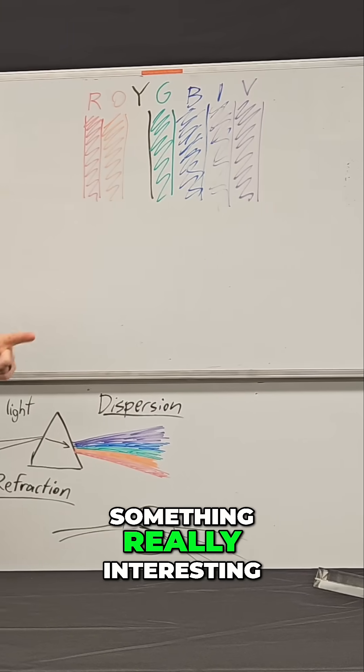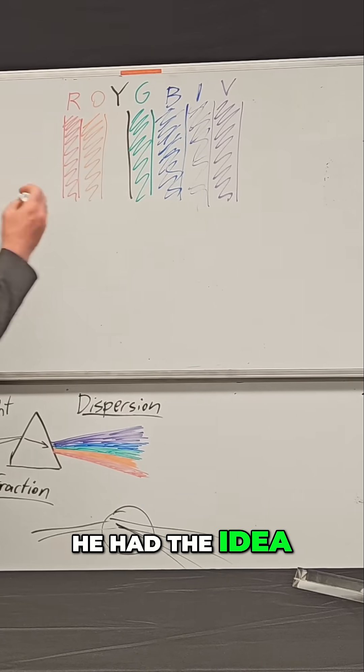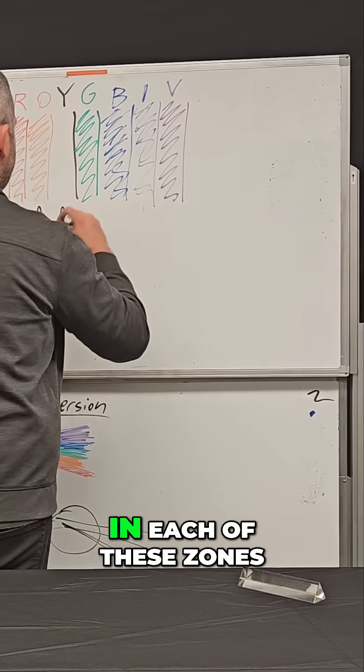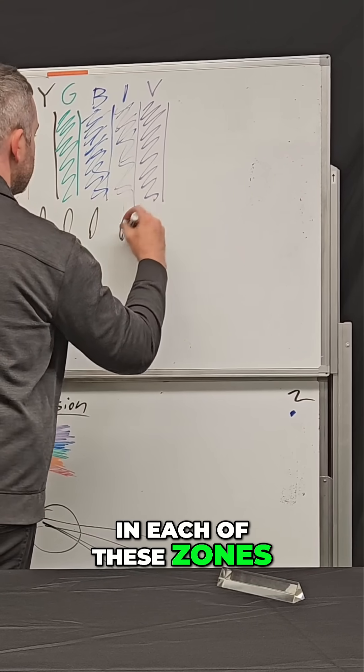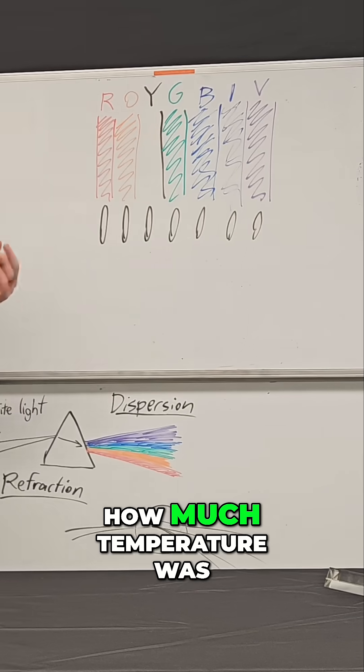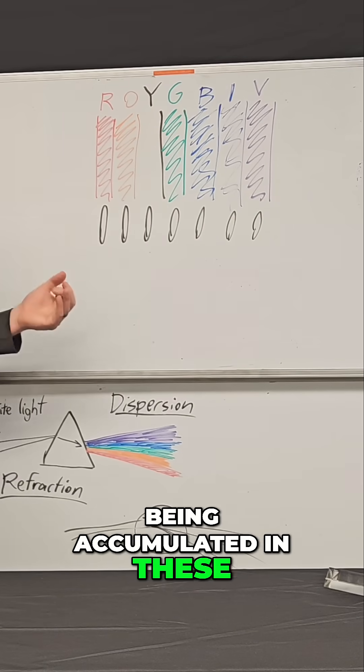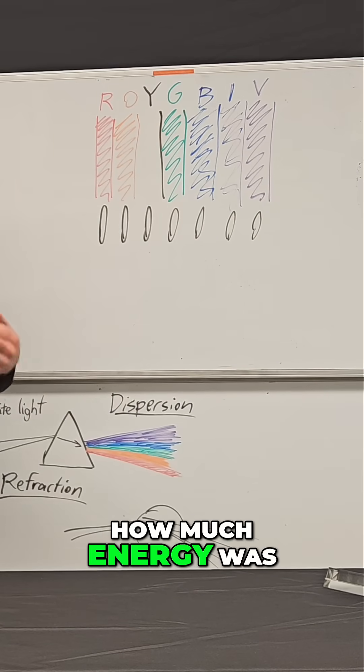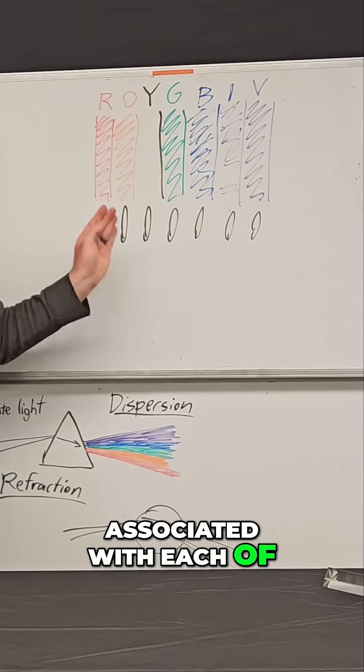And then he did something really interesting. He had the idea to put a thermometer in each of these zones to try to see how much temperature was being accumulated in these areas to get a sense of how much energy was associated with each of these bands of light.